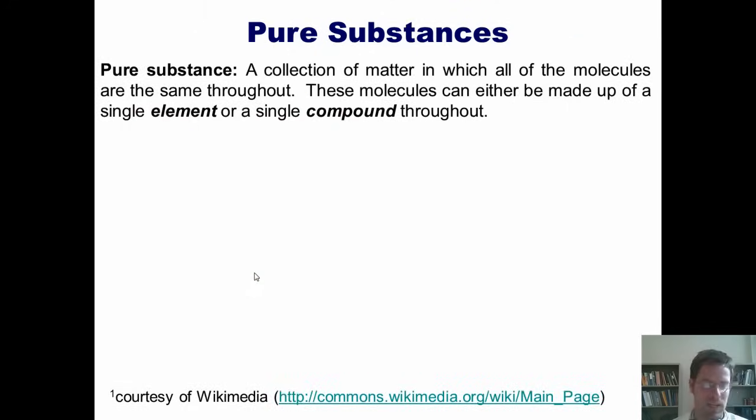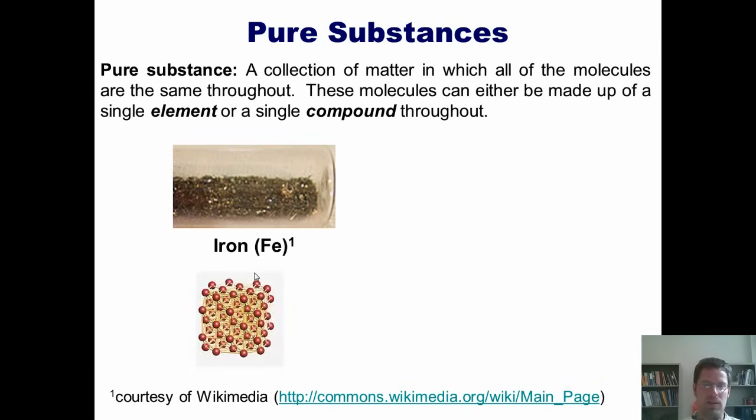Now for some more vocabulary. Strictly speaking, a pure substance is a collection of matter in which all of the molecules are the same throughout. These molecules can either be made up of a single element or a single compound throughout. Here are some examples. Once again, we've seen iron before. This is sort of a model showing very, very closely all of the individual iron atoms bonded together. You can see that if there are no other substances in there, this would be considered a pure substance.